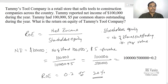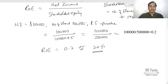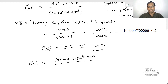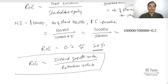This is how you calculate Return on Equity using net income and shareholders equity. In stock valuation, you can also calculate Return on Equity as dividend growth rate divided by retention ratio. This is another way of calculating Return on Equity, and in stock valuation this equation is commonly used.